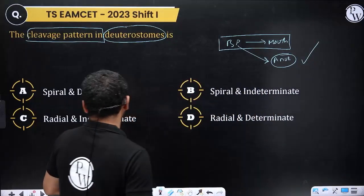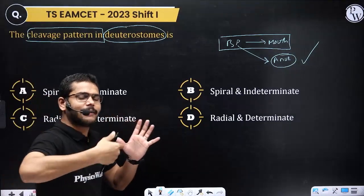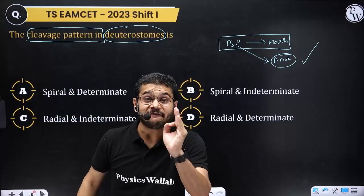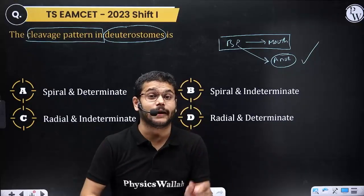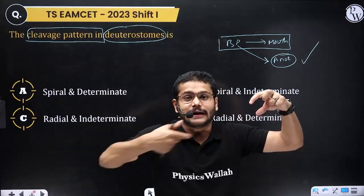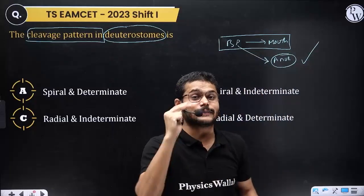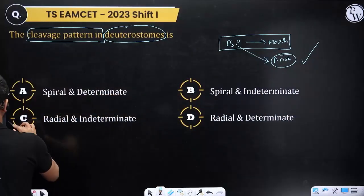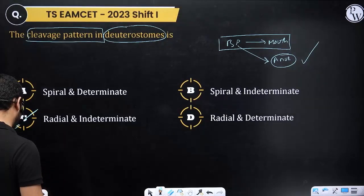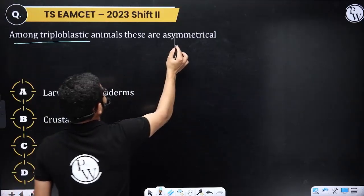In deuterostomes, cleavage pattern shows radial arrangement of blastomeres, and the fate of blastomeres is more specific - this blastomere develops into digestive system, this one into respiratory system, this one into excretory system. So the answer to this question is option C.